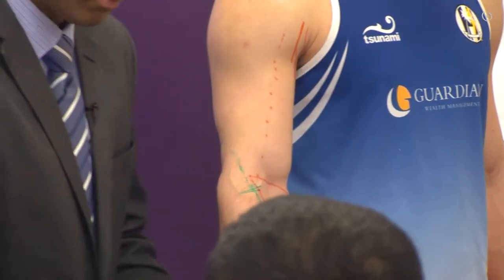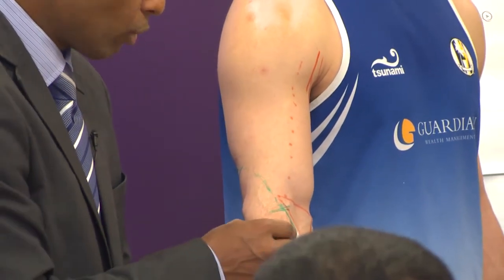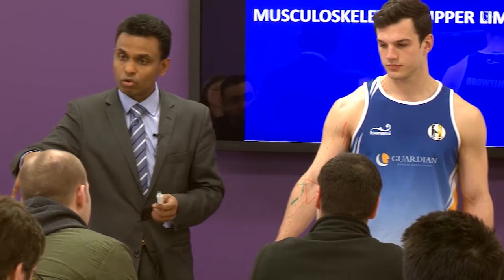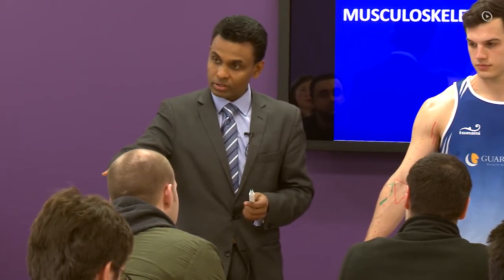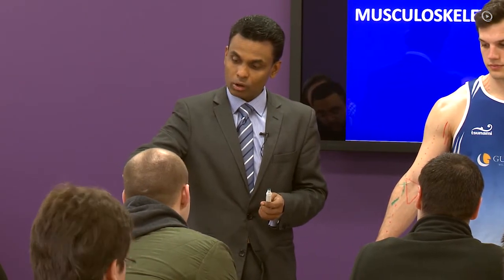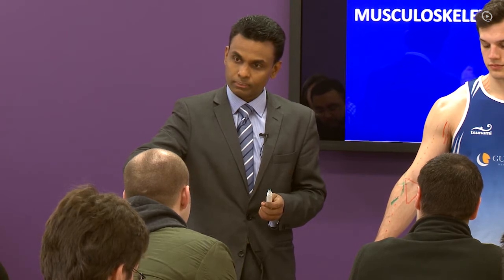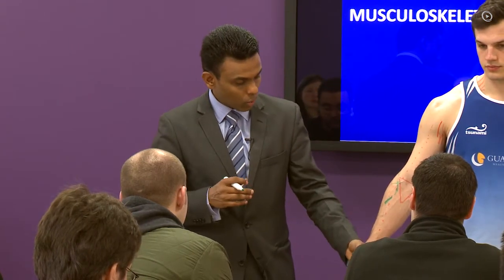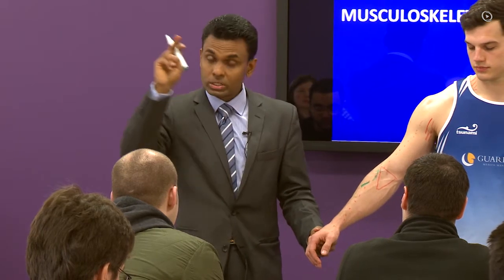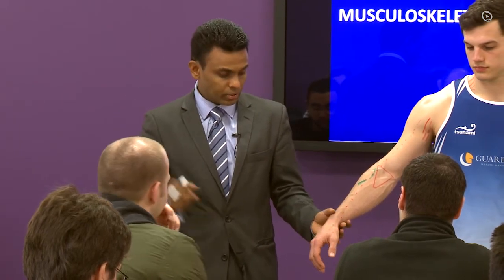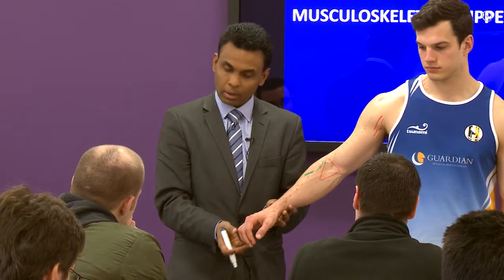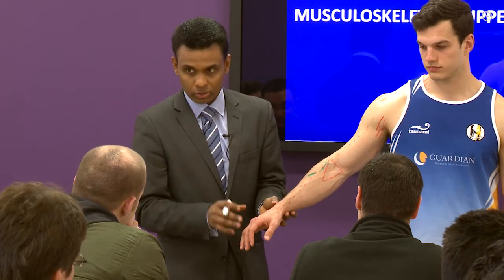If the patient has a posterior interosseous nerve injury following a laceration, they won't have a wrist drop. The patient will be able to lift the wrist up, but there is loss of extension of the fingers. So in a clinical scenario, if the patient is able to extend the wrist but not the fingers, it is the posterior interosseous nerve.